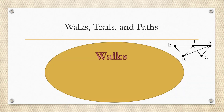In the previous video we learned that walks are a way of navigating a graph where there are pretty much no restrictions except you have to stay on the graph. So for example I could start at vertex A and go to B, then to E, then to D, then to C. I could go back to D if I wanted to — I can go anywhere and even backtrack, just as long as I stay on the graph. I could not, for example, just go from B to C; that would be going off the graph and would not constitute a walk.